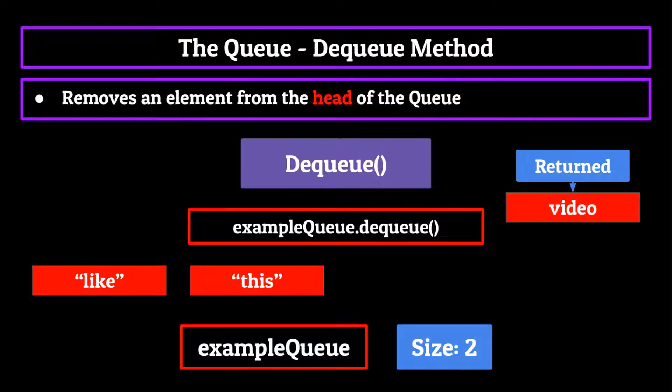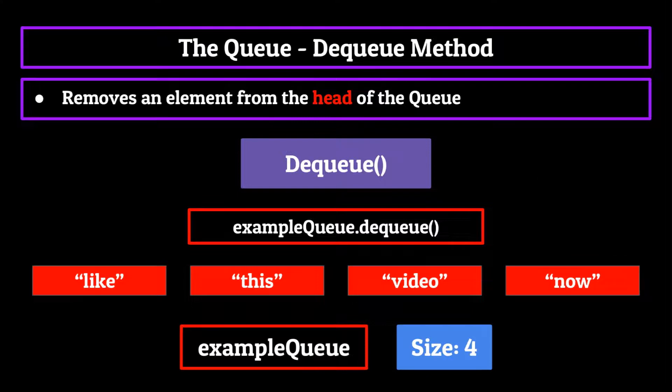We could keep doing this for every element in the list until it's empty, but the next methods we're going to talk about need some information to work with, so for now let's keep the queue filled with its original elements.